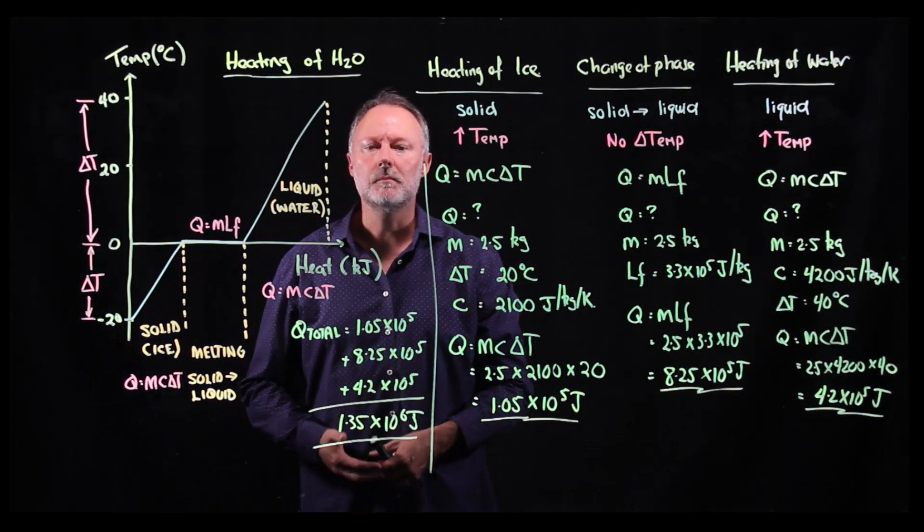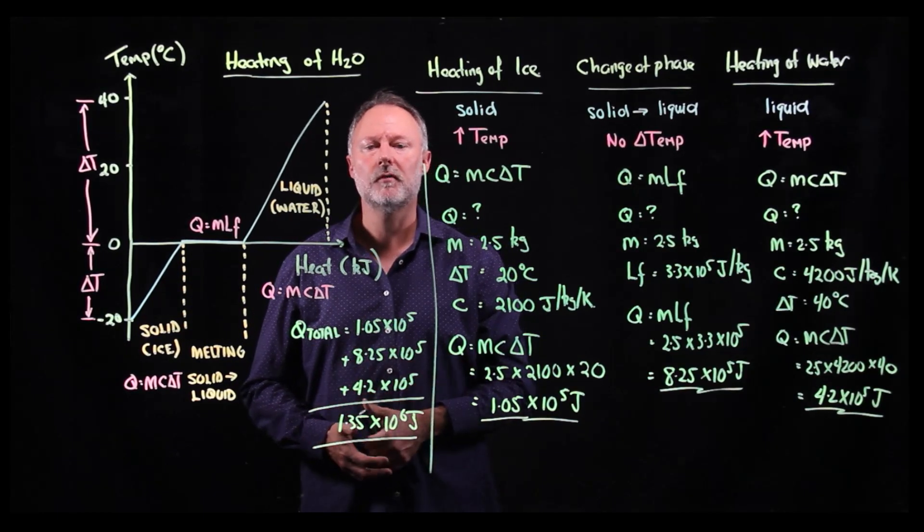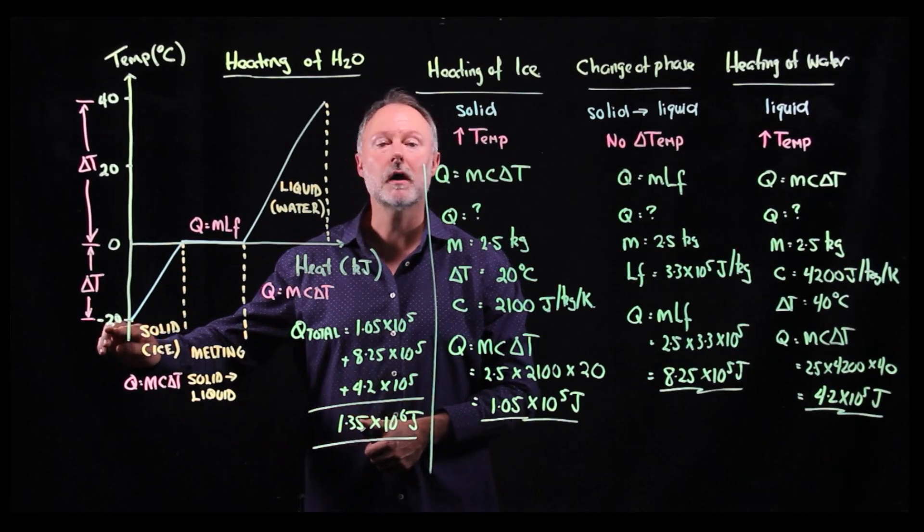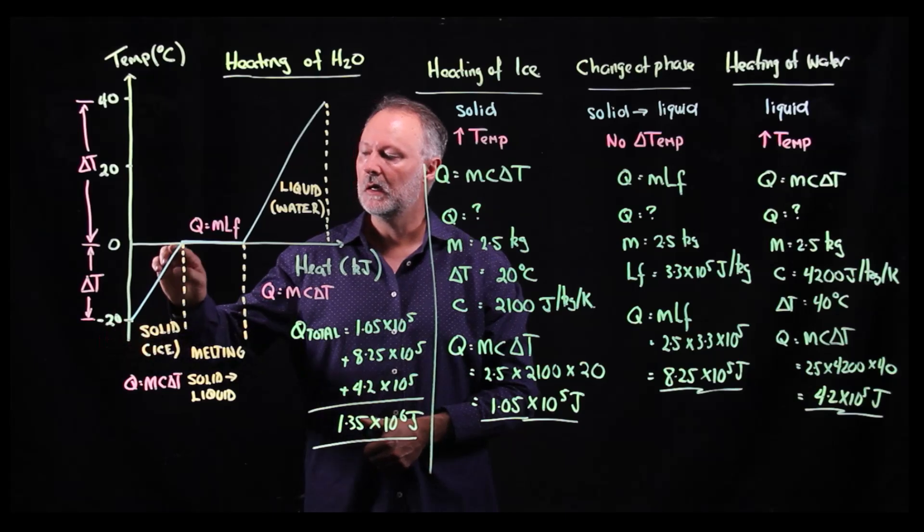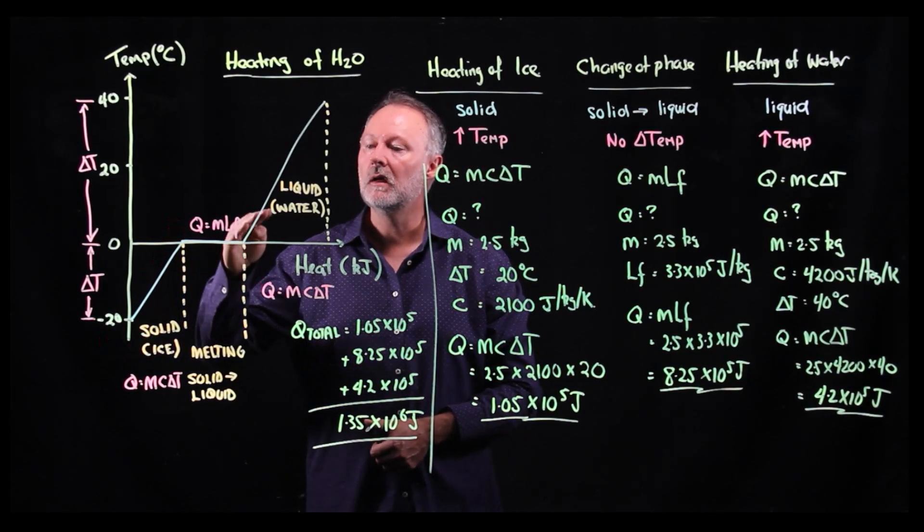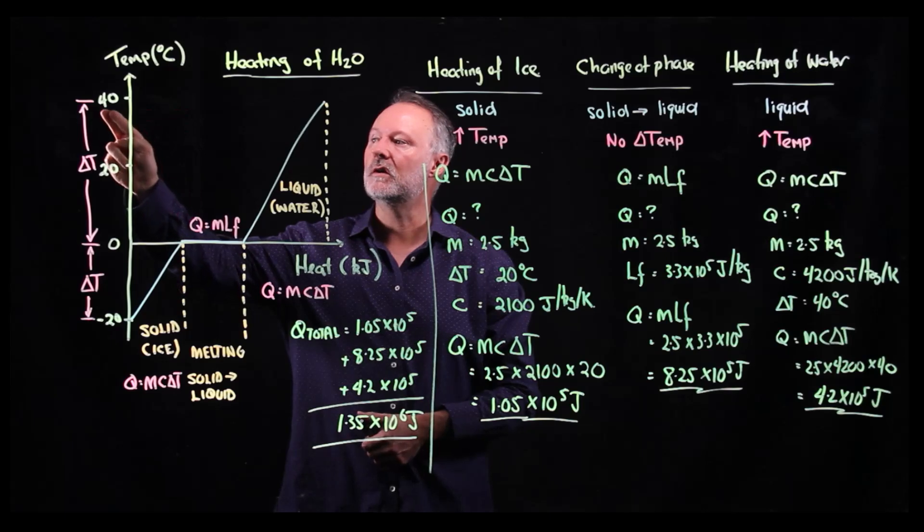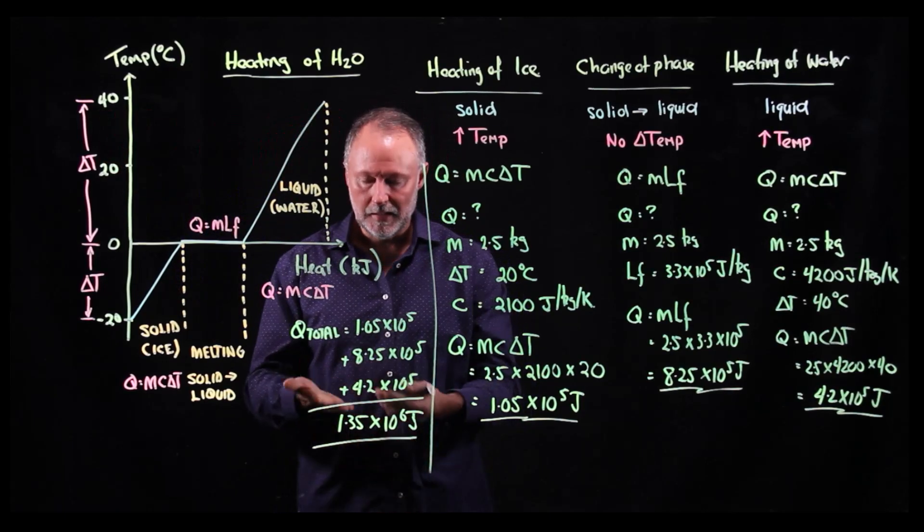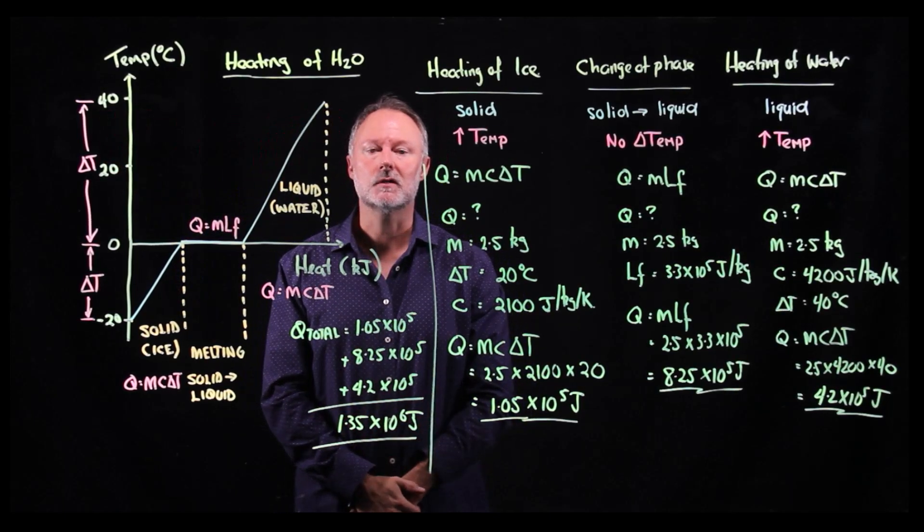So in total, the amount of energy required to raise 2.5 kilograms of ice, starting at minus 20 degrees Celsius, up to zero, then melting that into complete liquid, then heating that to 40 degrees Celsius as a liquid, is 1.3 by 10 to the 6 joules.